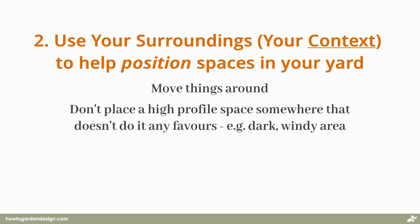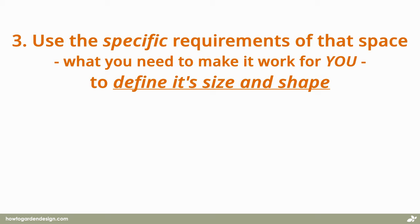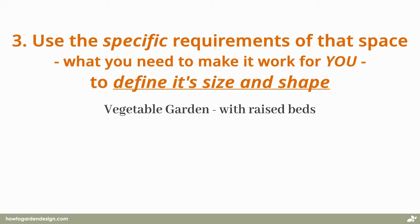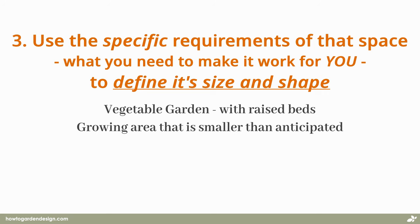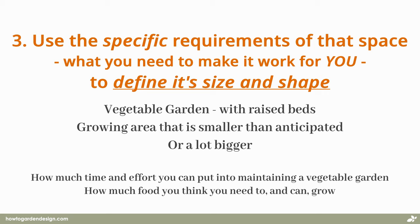The third principle, once you have some criteria for an area and have a few positions you want to explore it in, is to use the specific requirements of that space — so what you need to make it work for you — to define its size and shape. A quick example: you want a raised vegetable garden. If you just draw some lines on a page and call it a day, you may end up with a growing area that's smaller than you anticipated, or worse, a lot bigger. If you have criteria for how much time and effort you can put into maintaining it, and how much food you can grow, you're in a better position to size the beds to something you're able to manage.